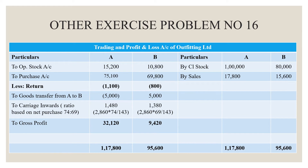On the credit side, closing stock is 1,80,000 combined for Departments A and B. Sales figures are 17,800 and 15,600. In this problem there is no sales return, so this is net sales. Totalling both sides, we get a debit balance as gross profit: 32,120 for Department A and 9,420 for Department B. Grand totals are 17,800 for A and 95,600 for B.